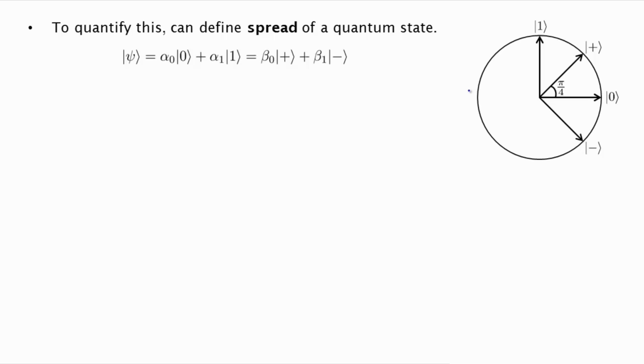So what we can do is we can define a measure of how uncertain, how inaccurately we know the bit value and how inaccurately we know the sign value. So let's write out the state psi as alpha 0 ket 0 plus alpha 1 ket 1, and we can also write it in the plus minus basis with amplitudes beta 0 and beta 1.